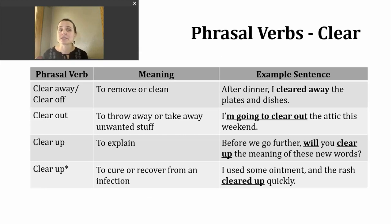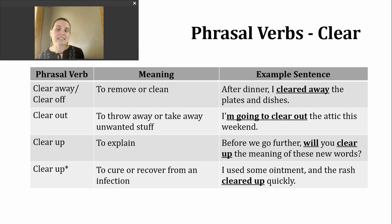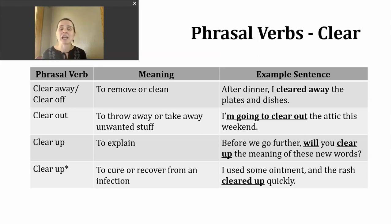Let's take a look at some phrasal verbs. We're going to discuss two phrasal verbs together because their meaning is pretty much the same. "Clear away" and "clear off" mean to remove or clean. When I use "clear away," what comes after the preposition are the things or objects I am removing. When I use "clear off," I put after "off" the object or surface that has been cleaned. For example: "After dinner, I cleared away the plates and dishes" — or with the same meaning: "After dinner, I cleared off the table," implying that I'm removing plates and dishes.